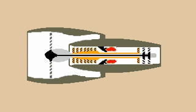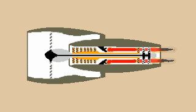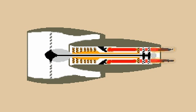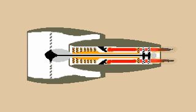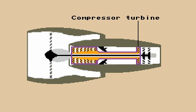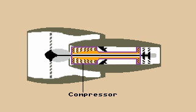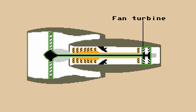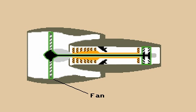In the combustion chamber, the air mixes with fuel and is ignited. The burning gases expand rapidly and rush through and spin the turbines. The compressor turbine turns the compressor, and the fan turbine turns the fan.